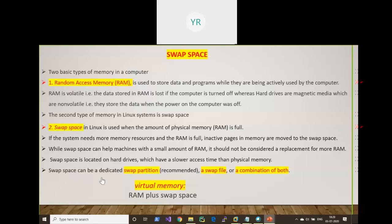Swap space can be a dedicated swap partition, a swap file, or a combination of both. In computer technology, virtual memory is known as RAM plus swap space. RAM is physical memory, and together with swap space it is called virtual memory — because swap is not exactly like RAM, it is space on the hard drive utilized like RAM.